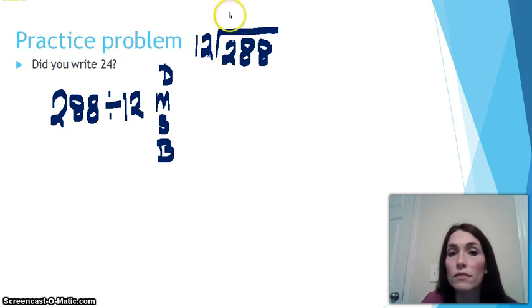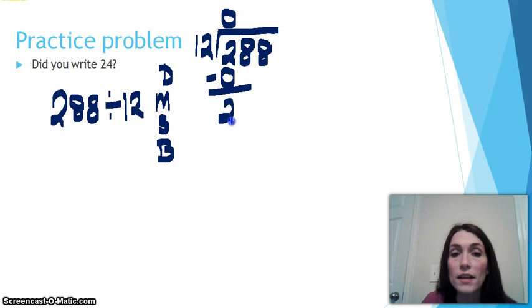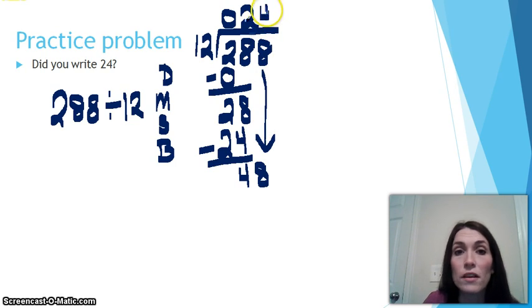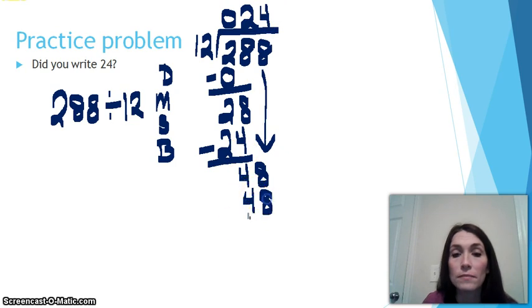12 will go into 28 two times. 12 times 2 is 24. I will subtract and then bring down my 8. 12 will make 4 groups out of 48 things. So 12 times 4 is 48. And then I subtract and I have no remainder.